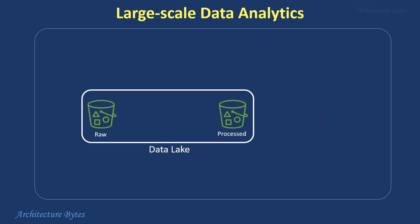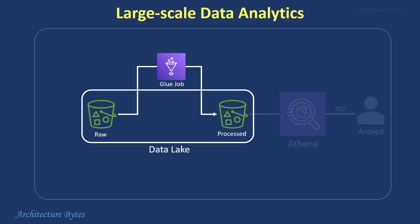Here's a quick example. A data lake has raw and processed buckets. A Glue job processes the data in the raw bucket and places the results in the processed bucket. Data analysts can then query and analyze the data in the processed bucket using SQL via Amazon Athena.